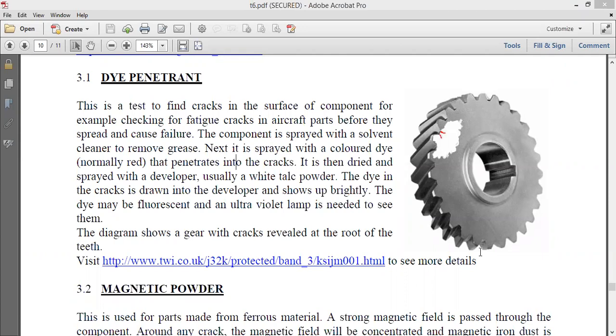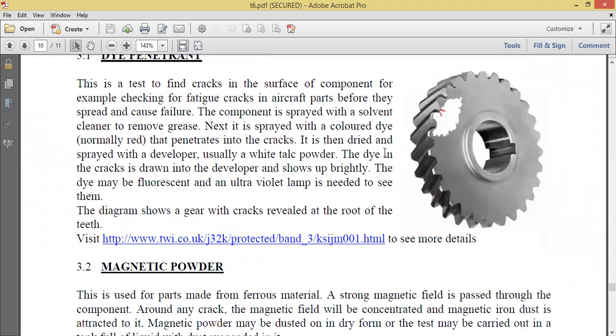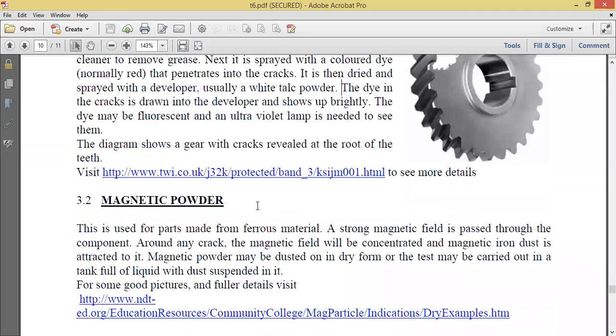Then the dye in the cracks is drawn into the developer and shows up brightly. The dye may be fluorescent and an ultra-violet lamp is needed to see them. So from there, we'll be able to tell, depending on the impact of the color, how deep those fatigued cracks go. There's an example here - a gear with cracks. As you can see there, the talc powder was put on it acting as a developer, and then the places where we had the cracks, the dye from inside showed up as a red color.